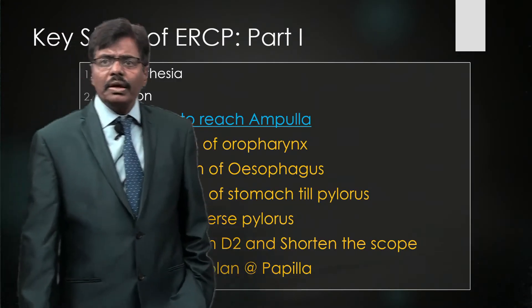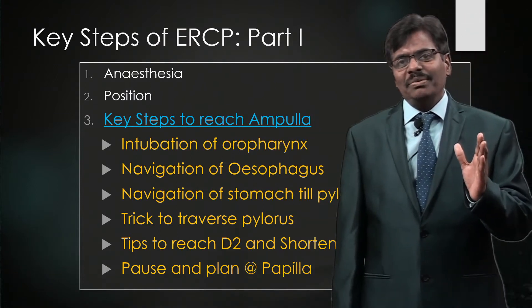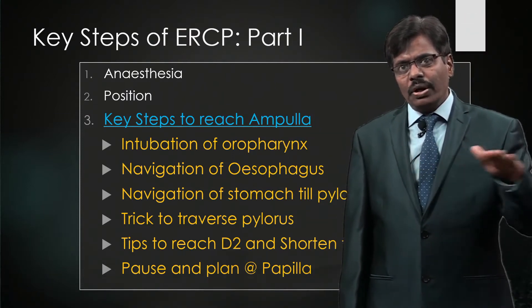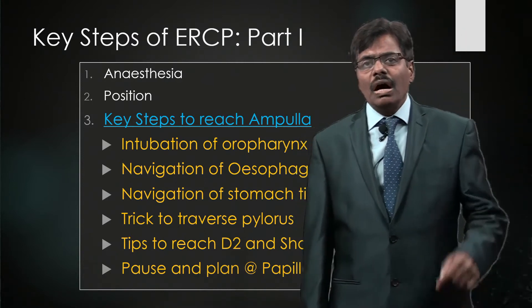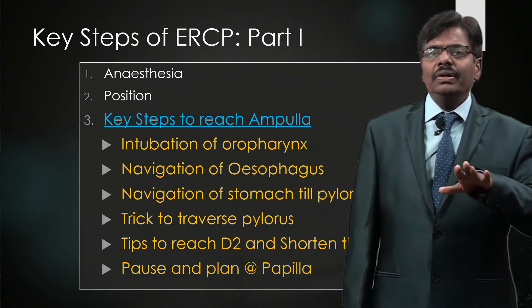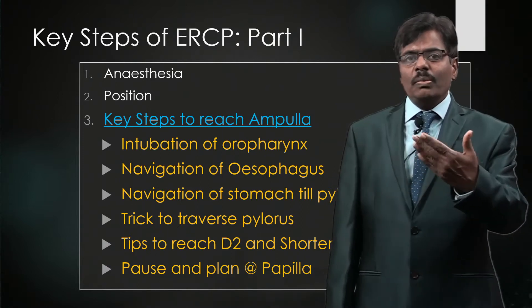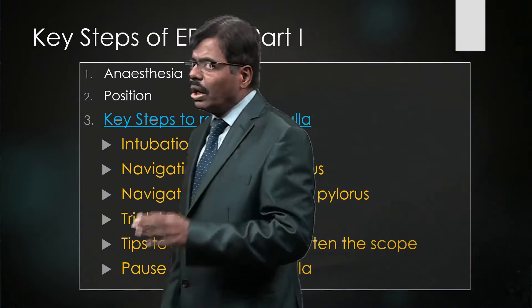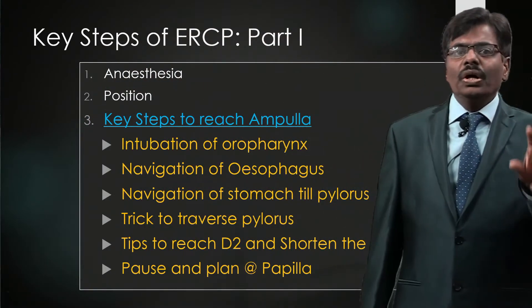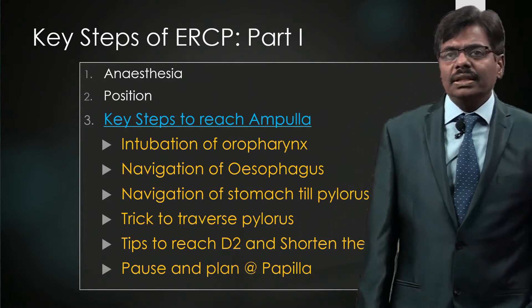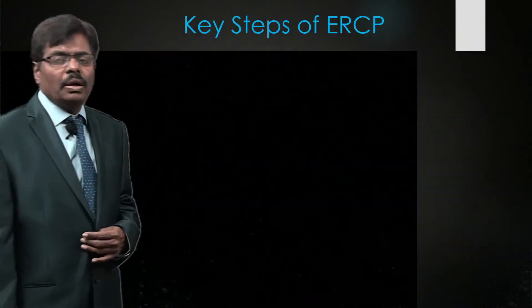The last class covered the importance of breaking steps into micro-steps: how to intubate the oropharynx with the side-viewing scope, how to navigate blindly down into the oesophagus to the 40 cm mark without getting lost in the stomach, how to reach the pylorus, how to enter D1 and D2, and finally dock at the ampulla. We are going to see all these in relation to the duodenoscopy.